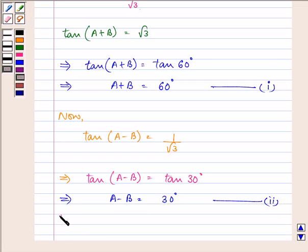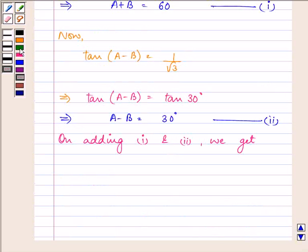Now, on adding the first equation and the second equation, we get (A+B) + (A-B) = 60° + 30°. So simplifying, we have 2A = 90°.